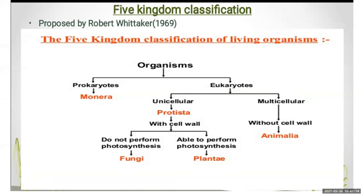In prokaryotic, it is divided into Monera. Eukaryotic, as it has cell membranes, is divided into two types: unicellular and multicellular. In unicellular, Protista is coming with the cell wall. In multicellular, without cell wall, it is divided into two parts: Fungi and Plantae. Fungi do not perform photosynthesis — they are heterotrophs, not having chlorophyll.